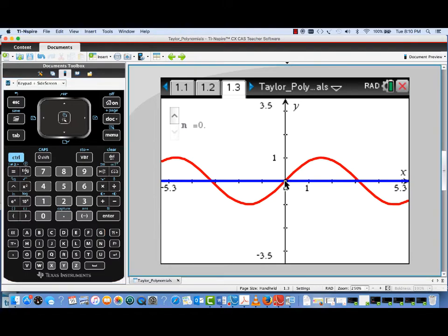As I move the point A, notice I just get a floating horizontal line. That's because each of these zero-degree polynomials is really just a constant function.